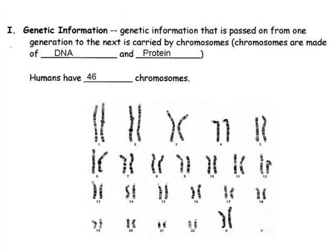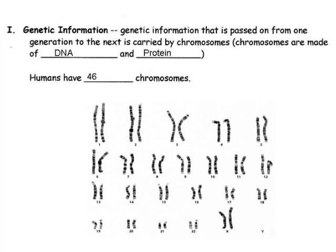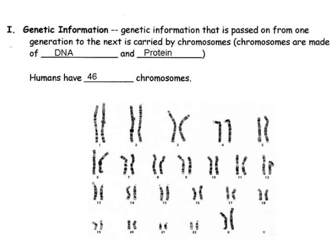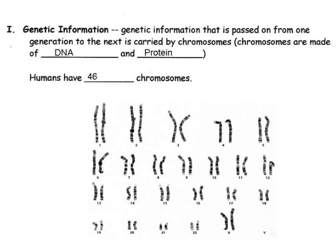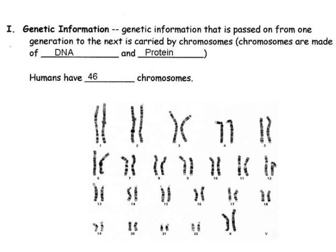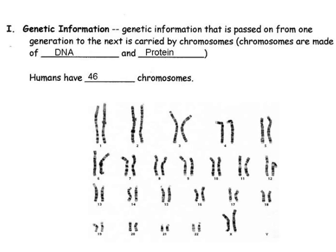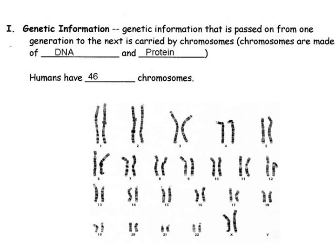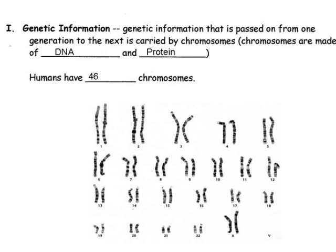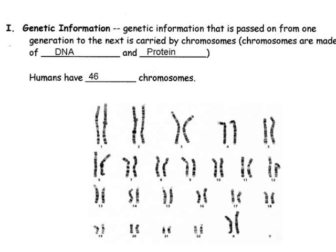This karyotype is that of a normal female. Females have two X chromosomes, whereas males have one X and one Y chromosome. In each pair, one chromosome is from the mother and the other is from the father. Let's assume that chromosome one on the right was from the father and the one on the left was from the mother.